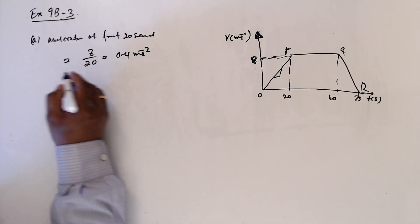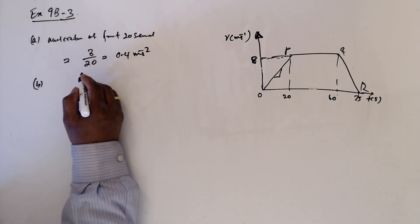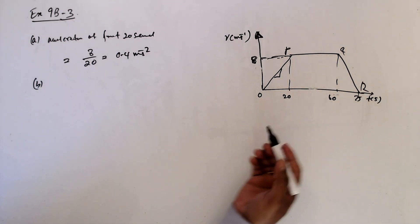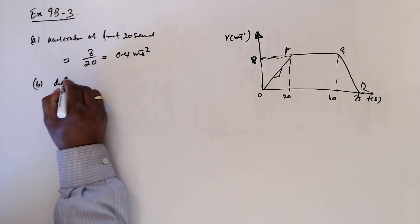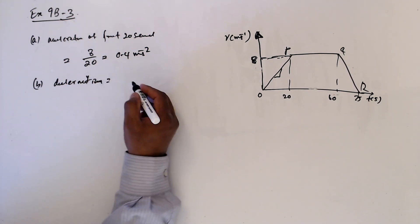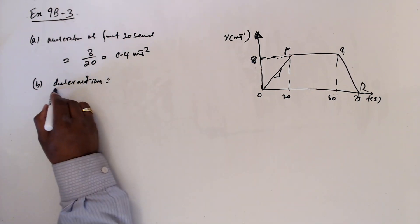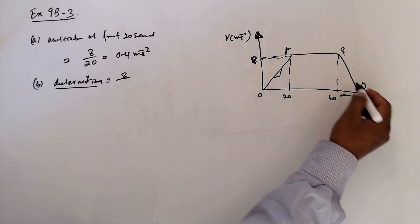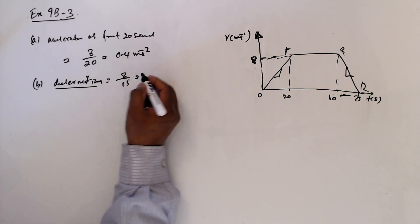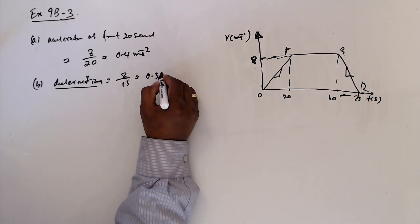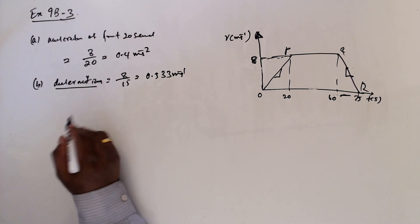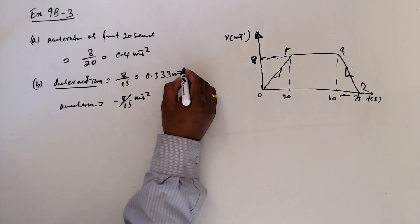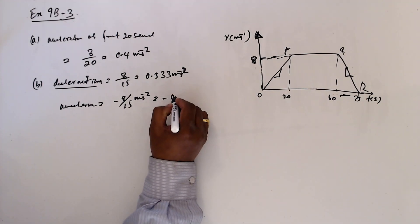For part b, the deceleration. There are two ways: if you use the word deceleration you don't need to put a negative sign. The gradient of that section is 8 divided by 15, which is 0.533 ms⁻¹. But if you express it in terms of acceleration, it is minus 8 over 15 ms⁻², which is minus 0.533.